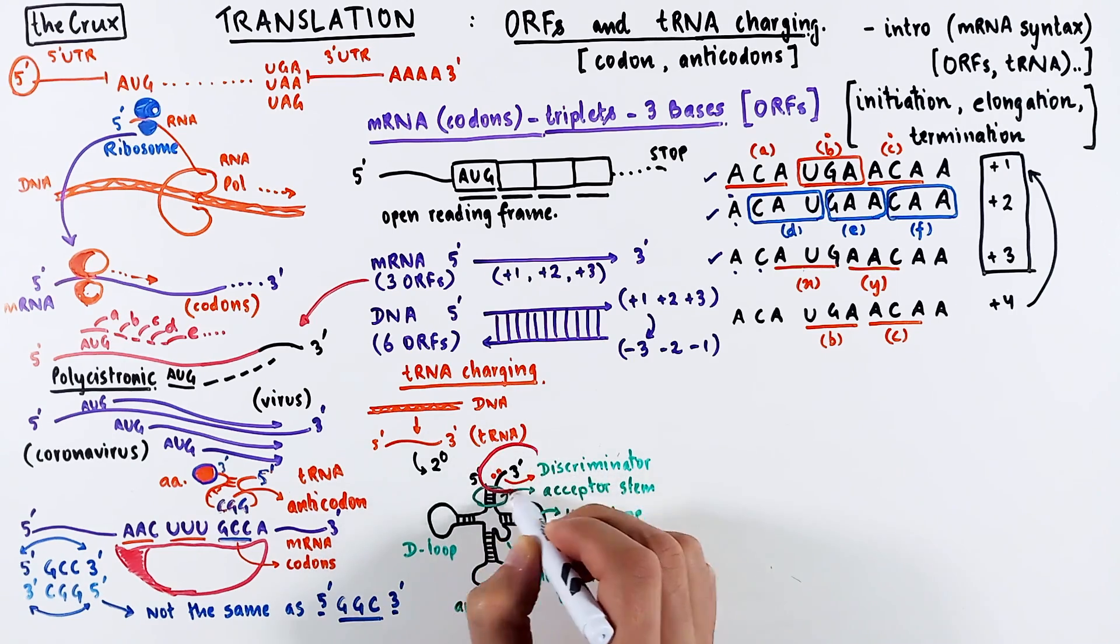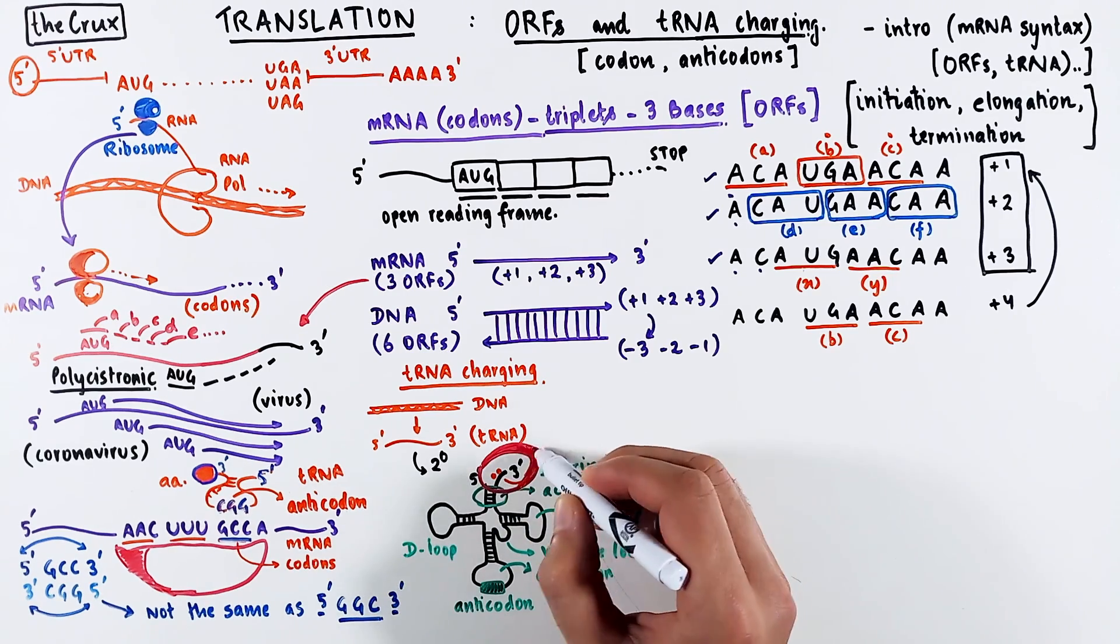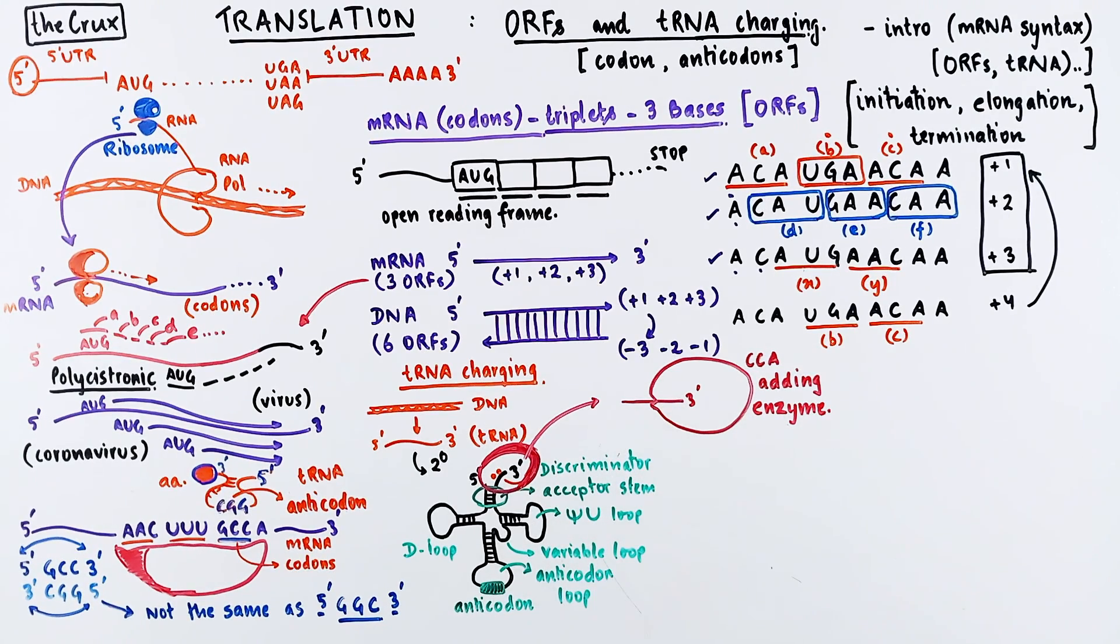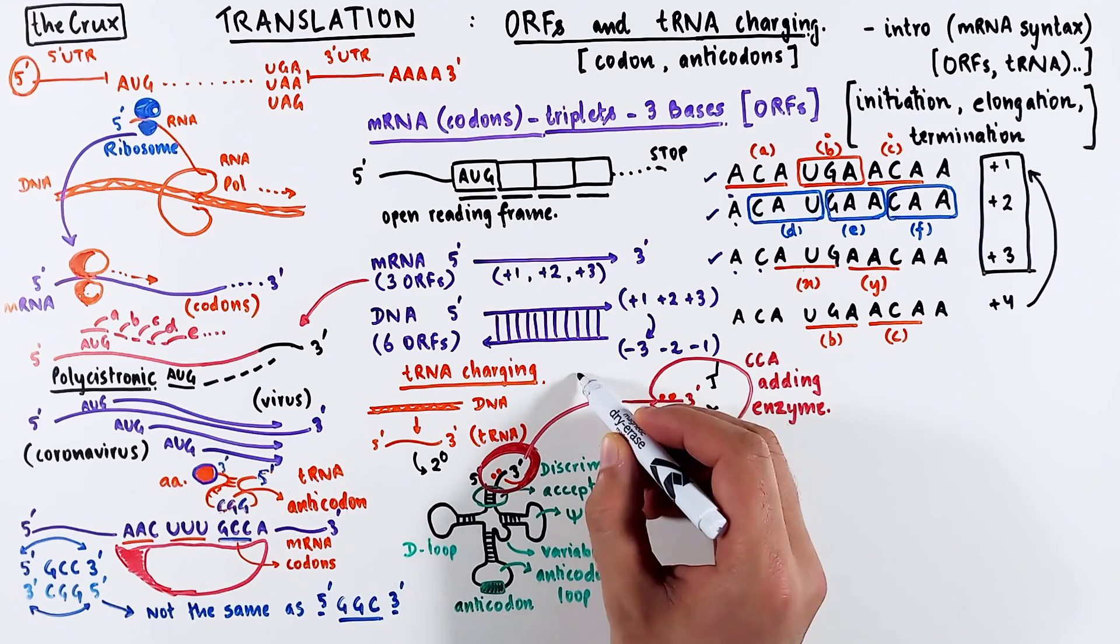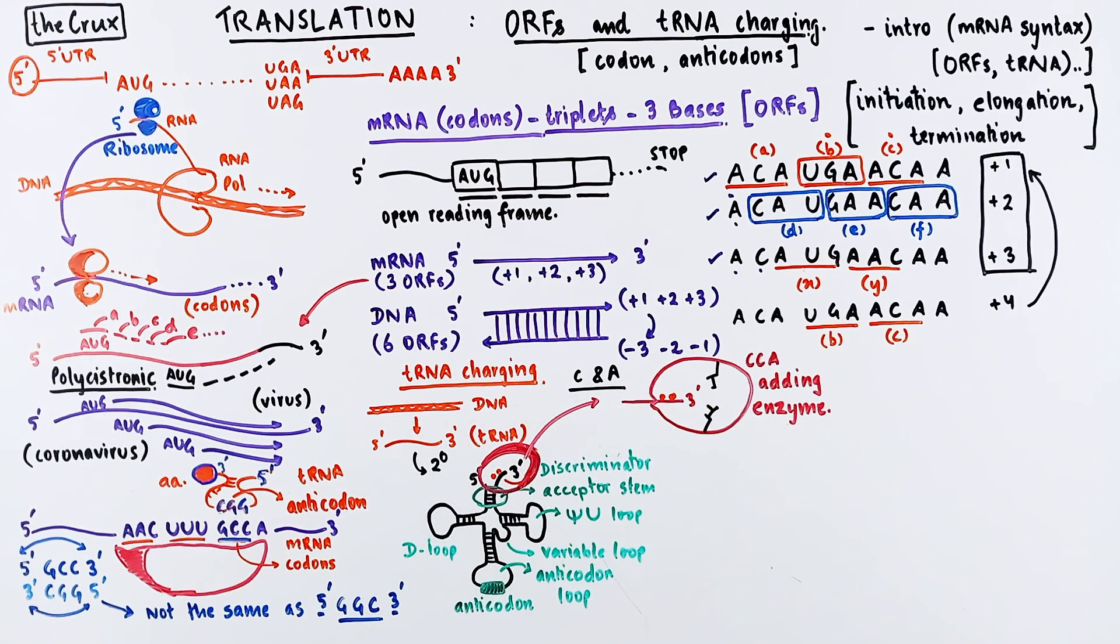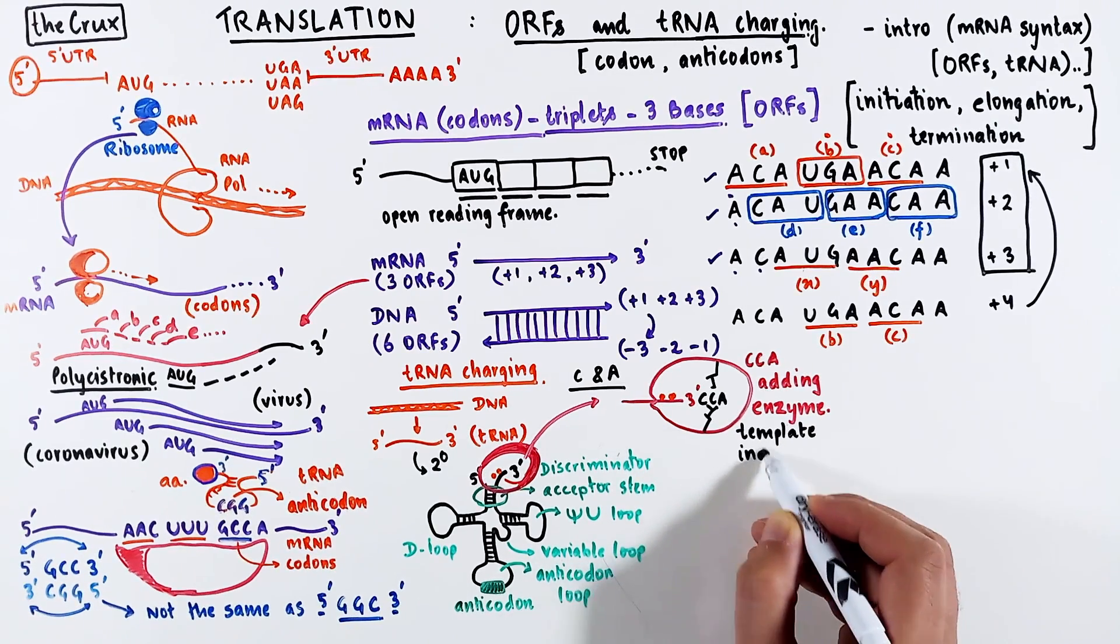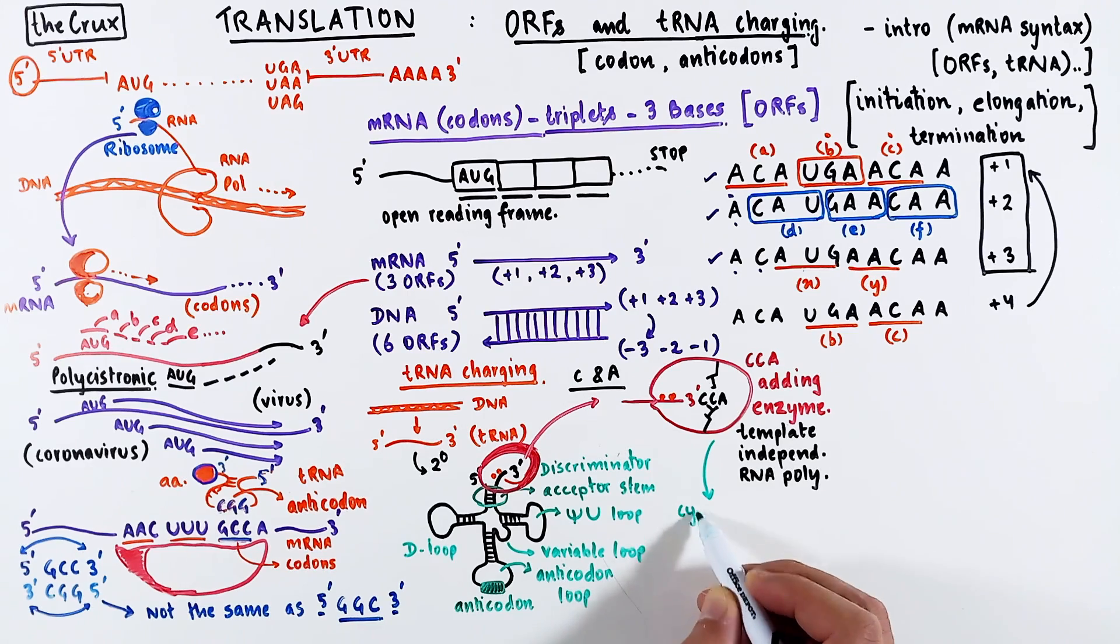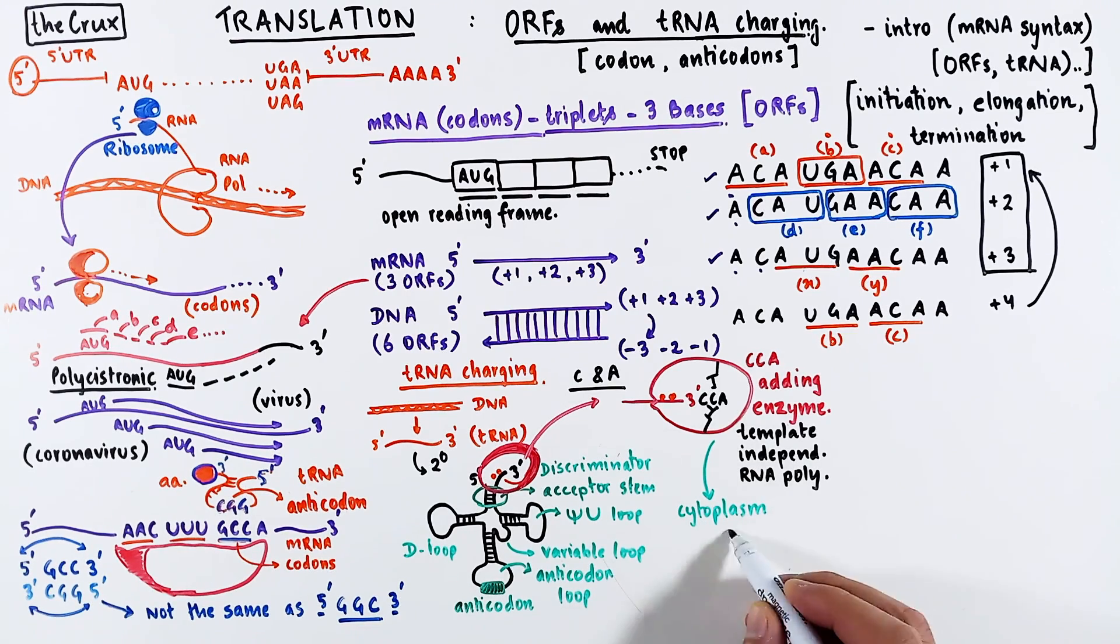After this secondary structure forms, a specific enzyme recognizes the 3' end of the transfer RNA. This enzyme, called CCA adding enzyme, holds on to the 3' end of the transfer RNA while recognizing the discriminator bases. This enzyme has specific amino acids in its catalytic core such that only the cytosine and adenine nucleotides can fit. And they are the ones that get attached to the 3' end of the transfer RNA. So this enzyme adds CCA specifically at the 3' end of the tRNA. Now just to make it more explicit, there is no template involved in this reaction. So this CCA adding enzyme is a template independent RNA polymerase.